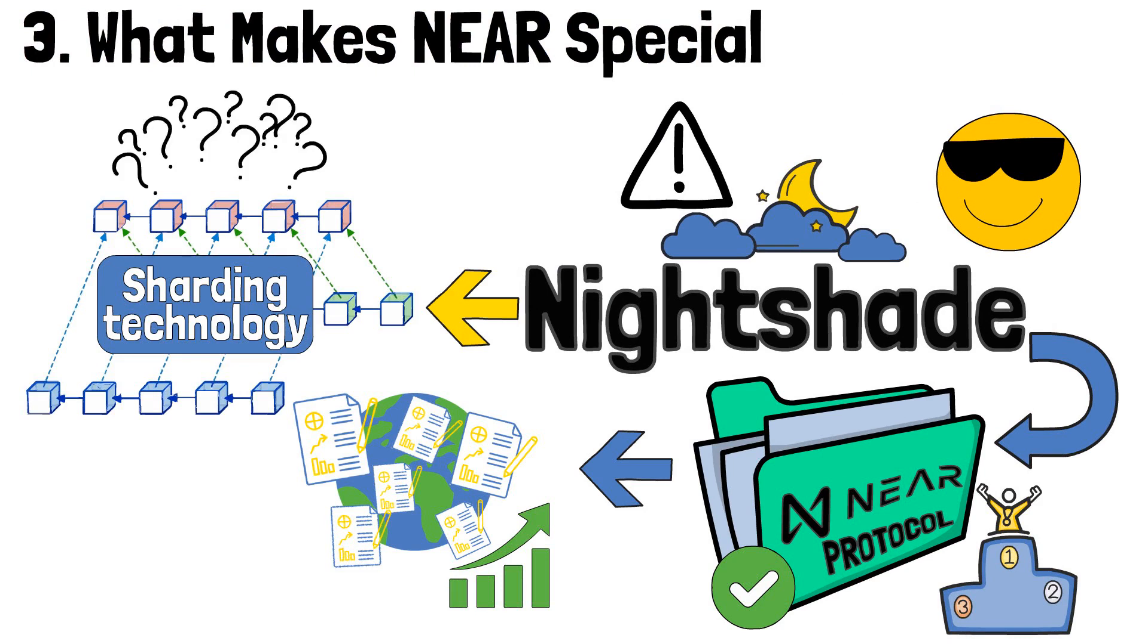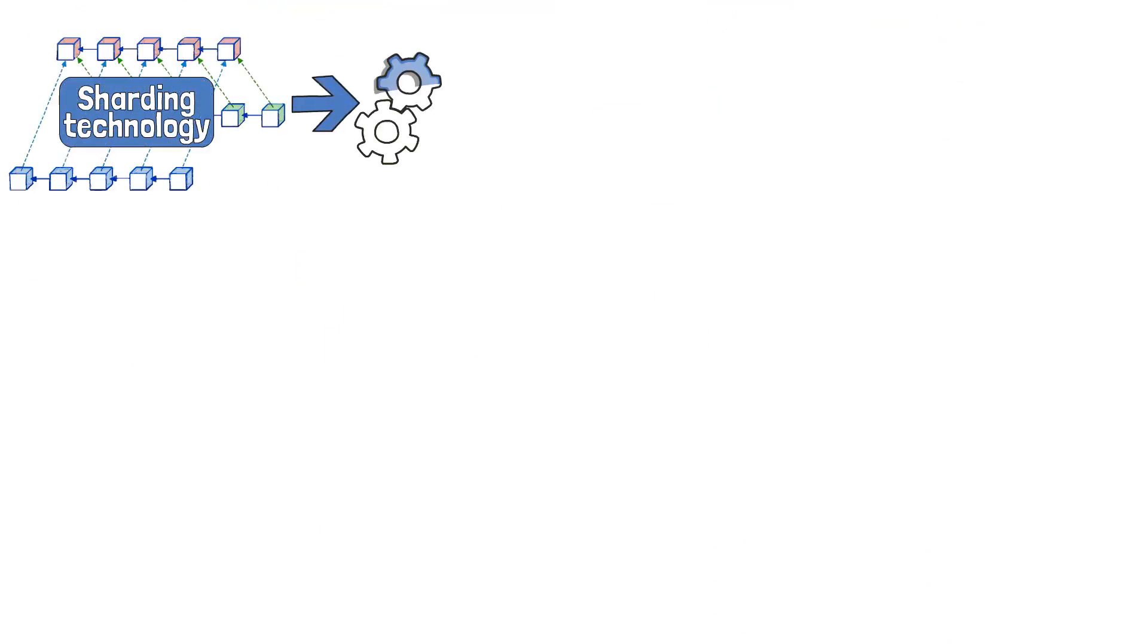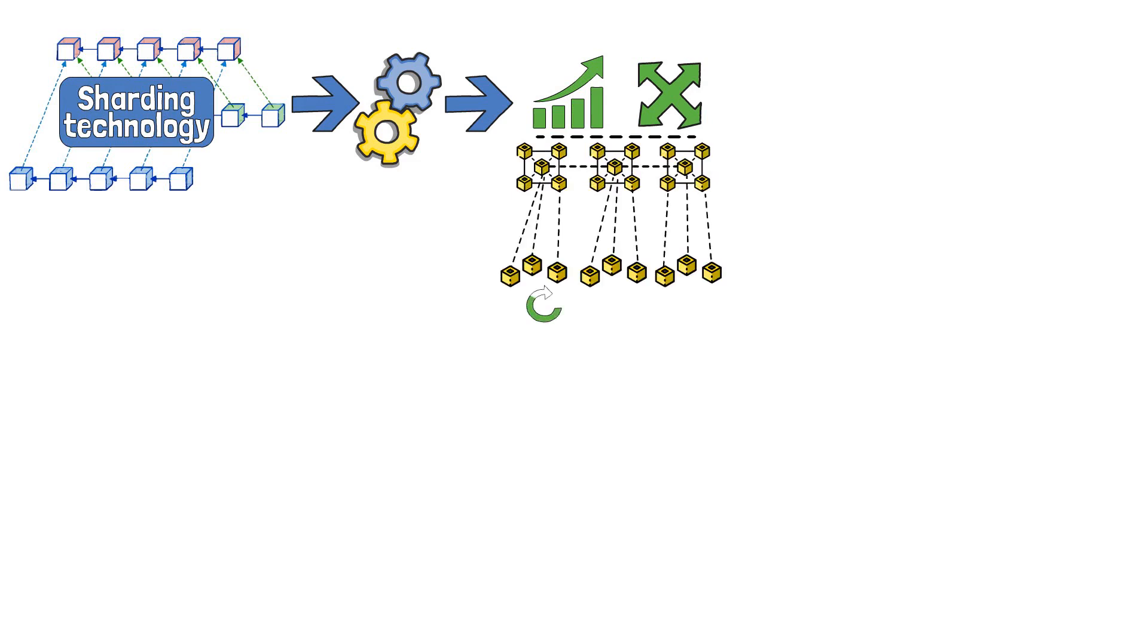Okay, what's that? Sharding is a concept that optimizes the efficiency and scalability of blockchain networks. This technique divides the blockchain into smaller, self-sustained segments, known as shards, each of which independently processes transactions and executes smart contracts.